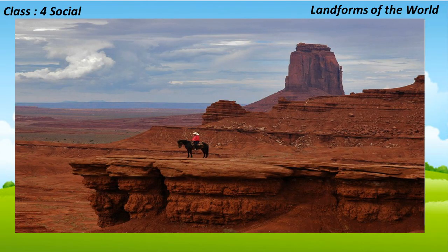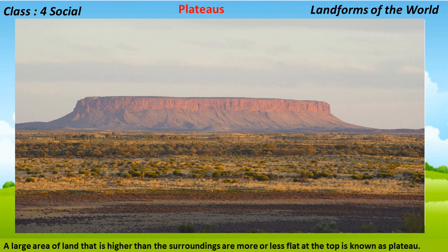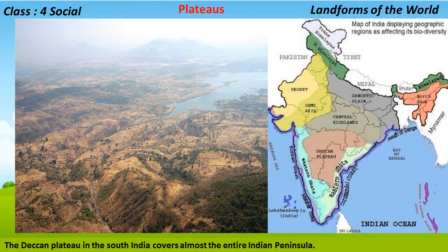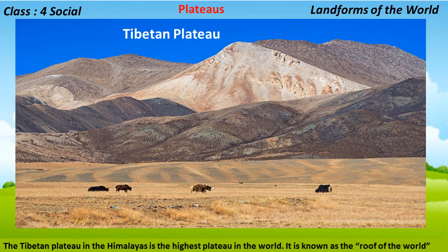What is a plateau? A large area of land that is higher than the surroundings and more or less flat at the top is known as a plateau. The Deccan Plateau in south India covers almost the entire Indian peninsula. The Tibetan Plateau in the Himalayas is the highest plateau in the world; it is known as the roof of the world.